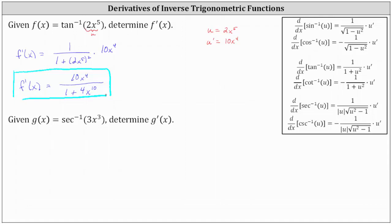Next, we have g of x equals inverse secant of 3x cubed, and we're asked to determine g prime of x. Once again, notice how we have a composite function where the inner function u is equal to 3x cubed. So if we have u equals 3x cubed, then u prime is the derivative of 3x cubed with respect to x, which is 9x squared.